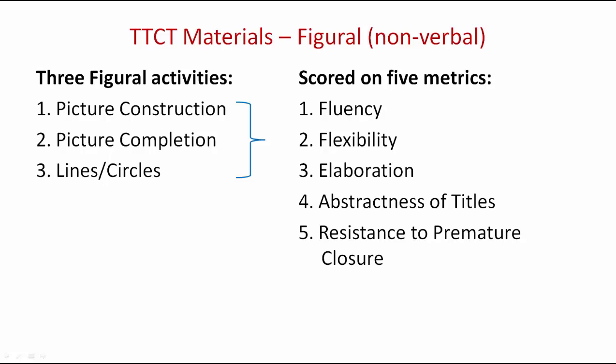For example, in the picture completion task, an examinee may be provided with a shape such as a triangle. They will then be asked to use the shape to draw a picture of which the provided shape is an important component. Another example: during the lines and circles activity, examinees may be provided with a sheet of paper containing 40 or more circles and asked to draw or sketch objects of which circles form a major component. This is especially useful for measuring fluency and flexibility, to see how many and what variation the examinee is able to come up with.